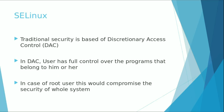Traditional security within the system has been based on discretionary access control, which is also known as DAC. Normally each program has full control over the access to its resources. If a specific program decides to make an incorrect access — like trying to access private information from the user or the system — the executed program will have the same permissions as the user who is executing it.